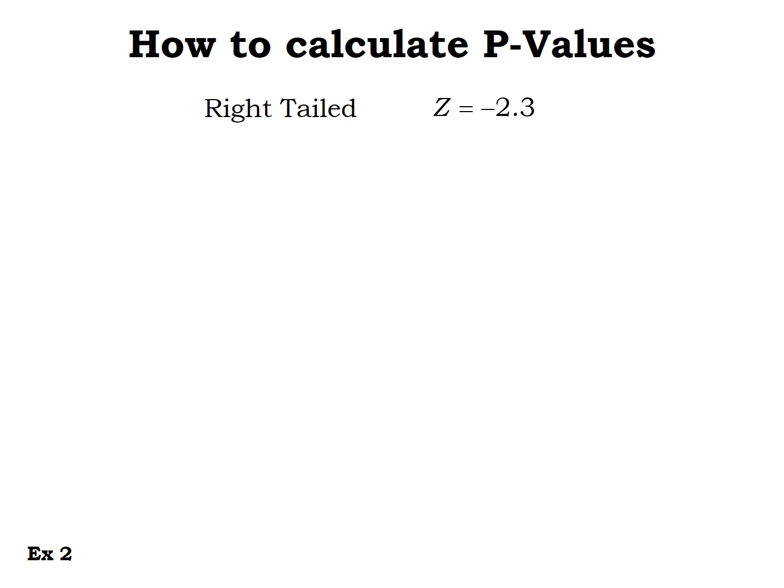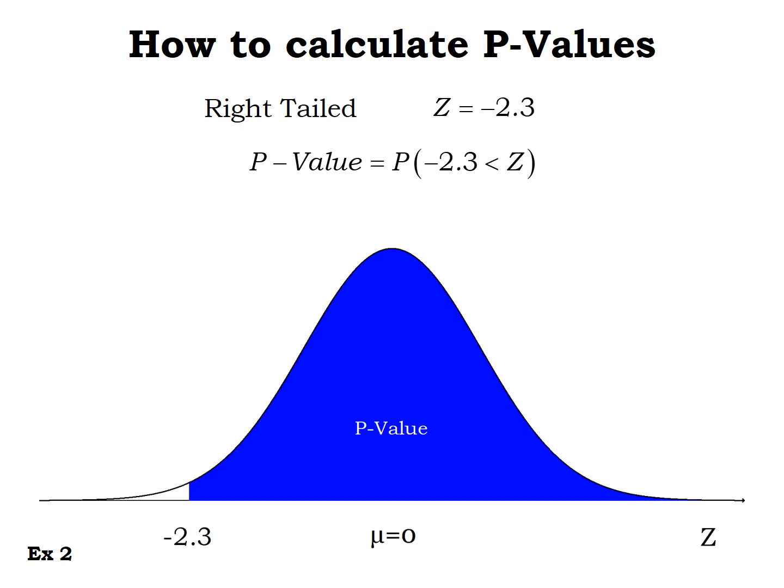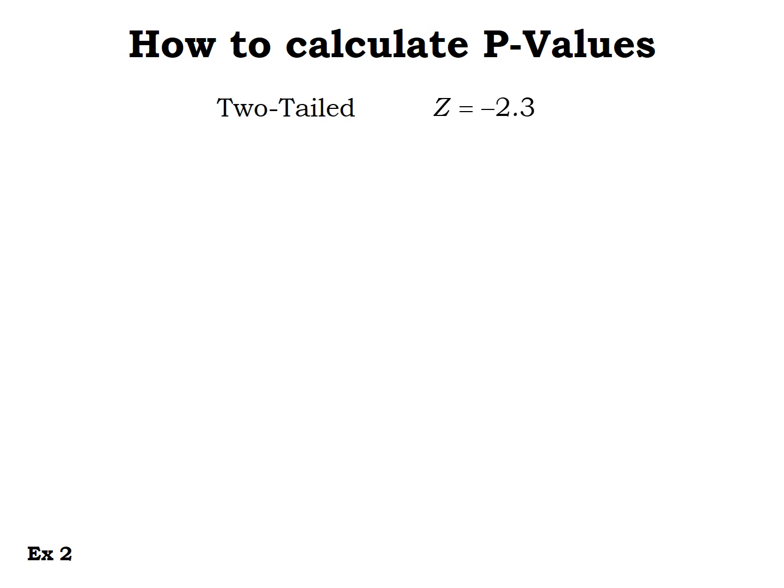For a right-tailed test with z-score negative 2.3, the p-value is the probability of being bigger than that z-score — the area to the right. Using the normal CDF, we end up with 0.9893. It doesn't matter if it's a z, t, or chi-squared score: right-tailed means it's the area to the right of wherever your test statistic is.